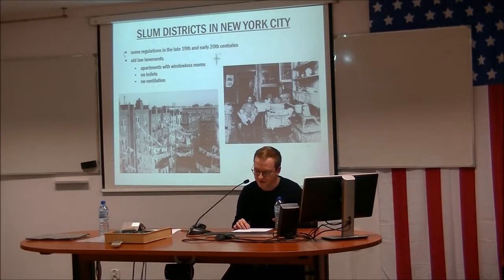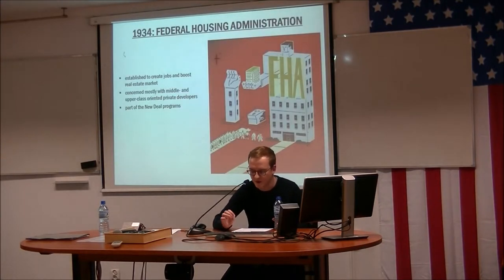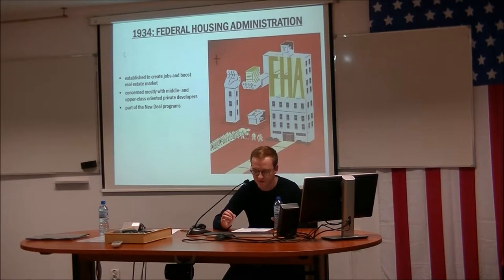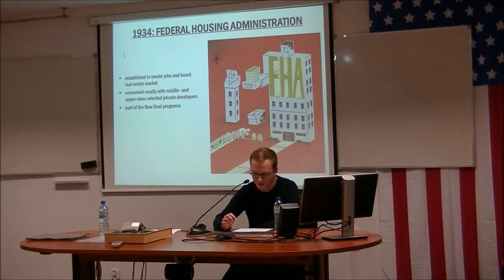Not much had been done to improve the situation prior to the 1930s. The first attempt to tackle the problem of housing conditions came in the New Deal era, specifically in 1934, when the Federal Housing Administration was established to boost the economy and provide unemployed architects and construction workers with jobs. Even though it was considered a major step, the FHA responded mostly to the needs of private developers who were eager to finance only middle- and upper-class developments — housing the poorer residents was utterly uneconomical from their perspective.